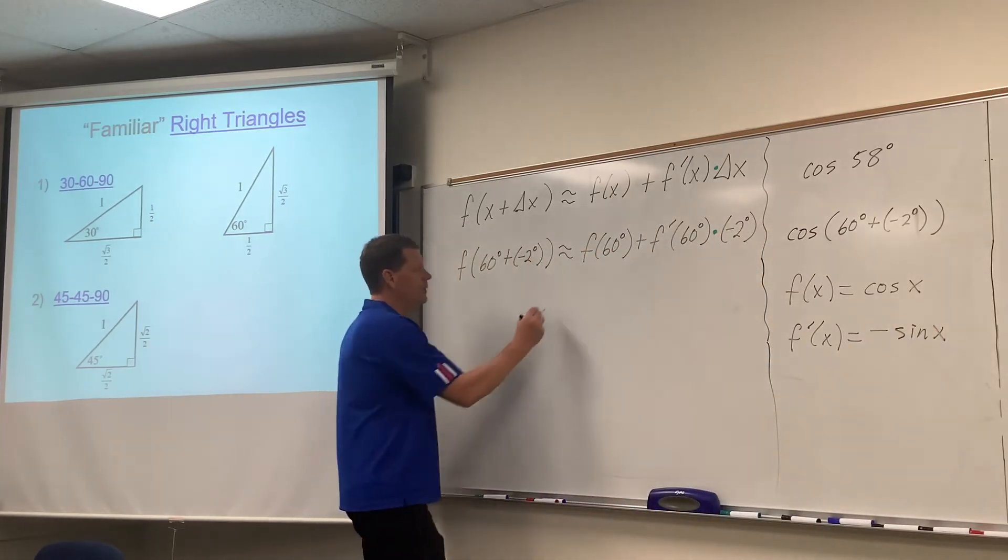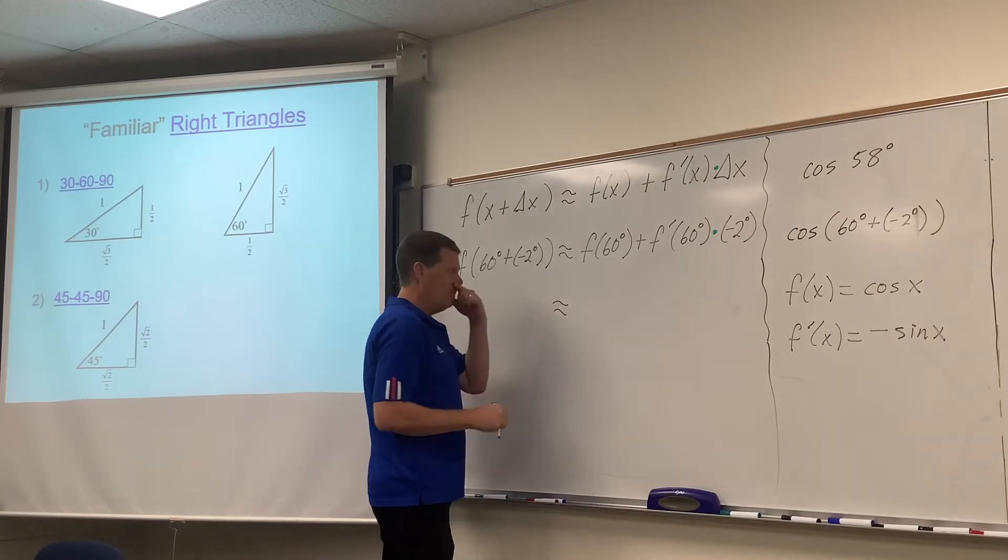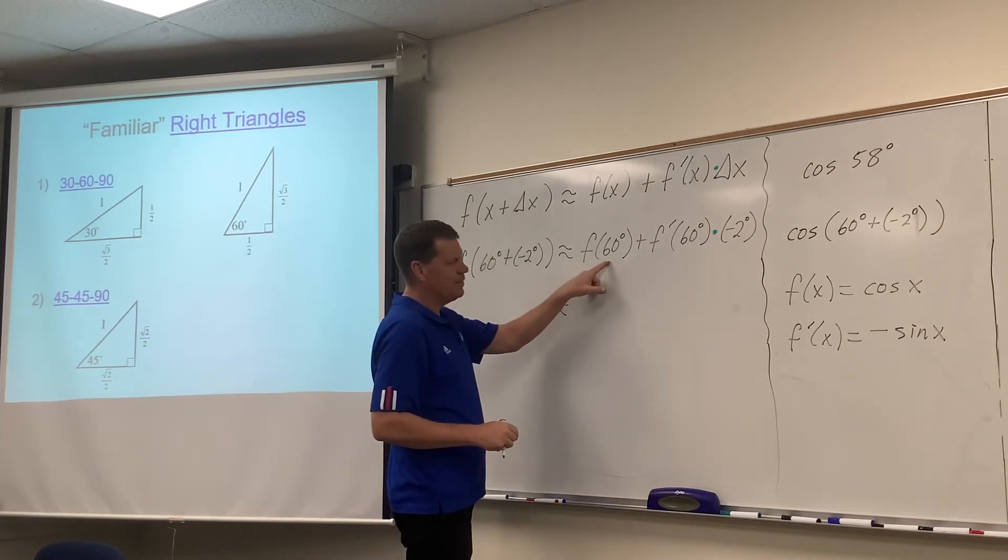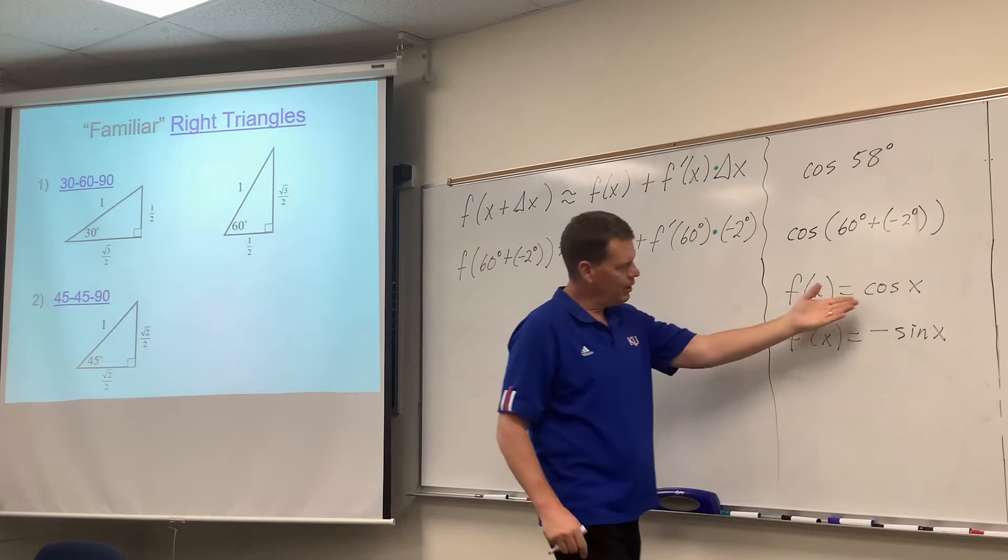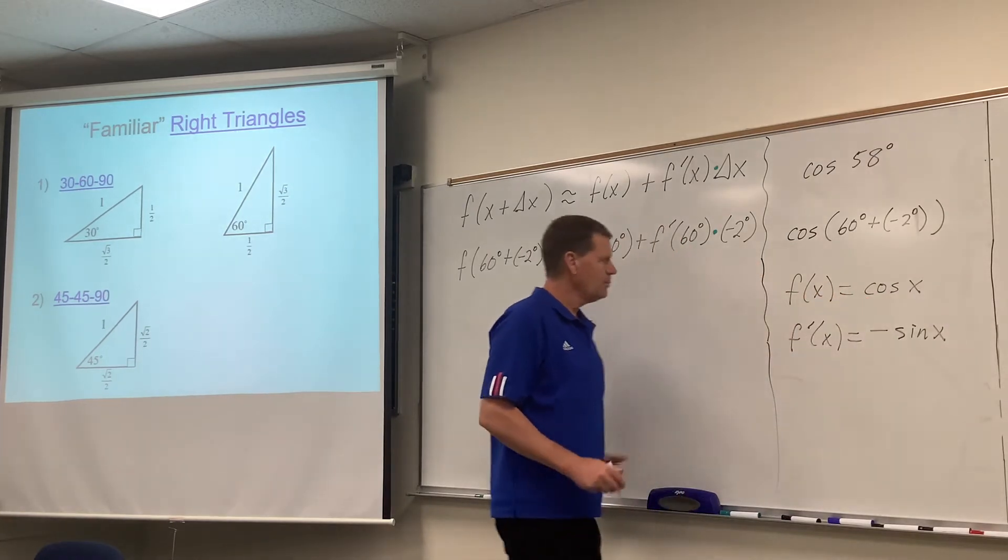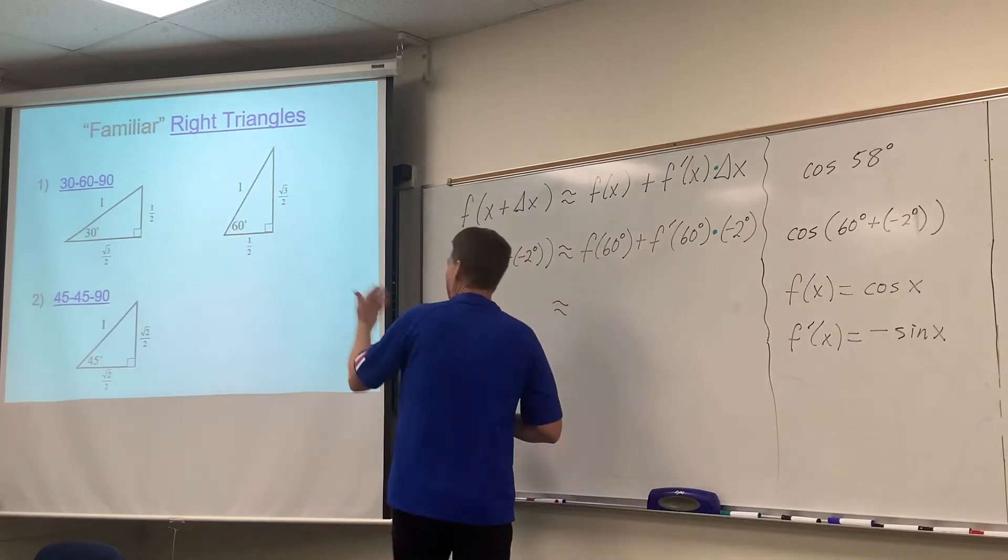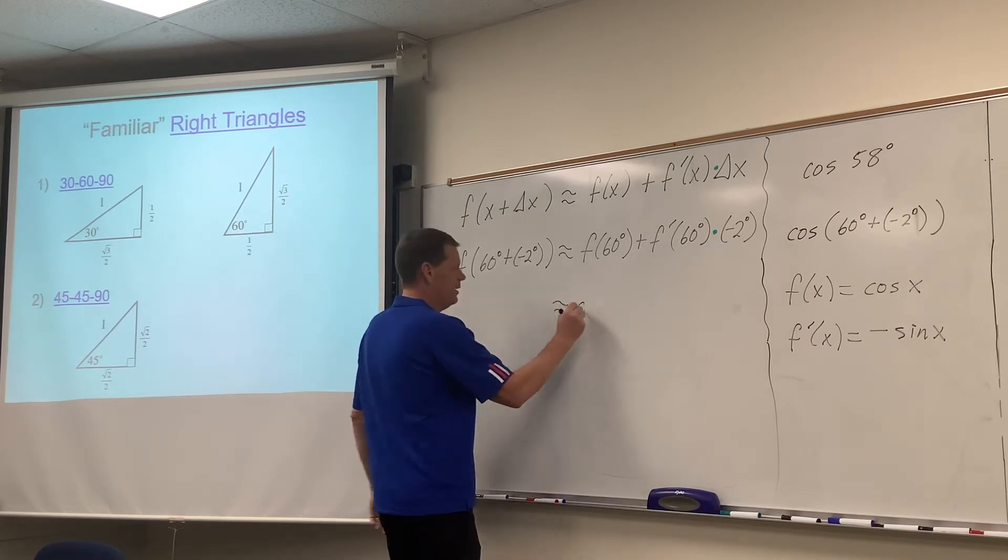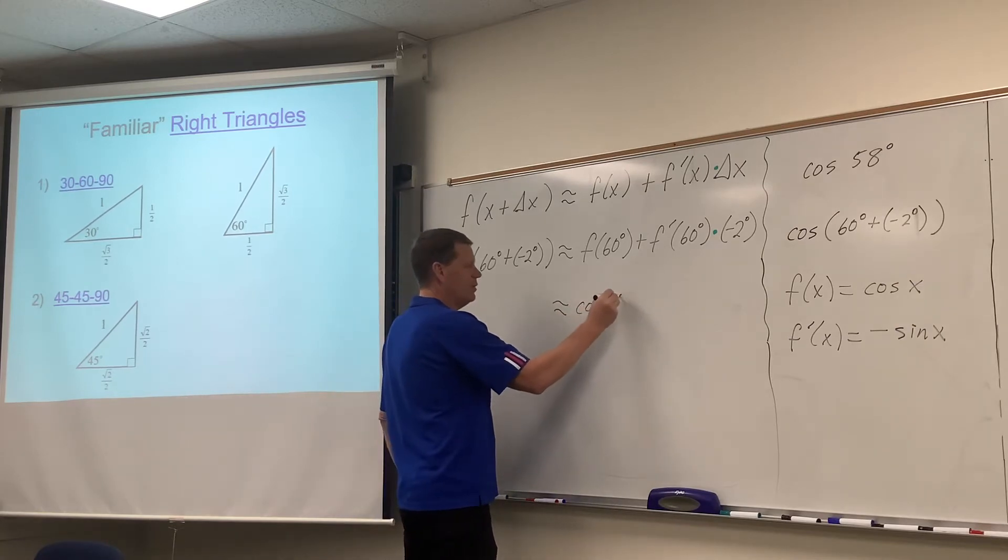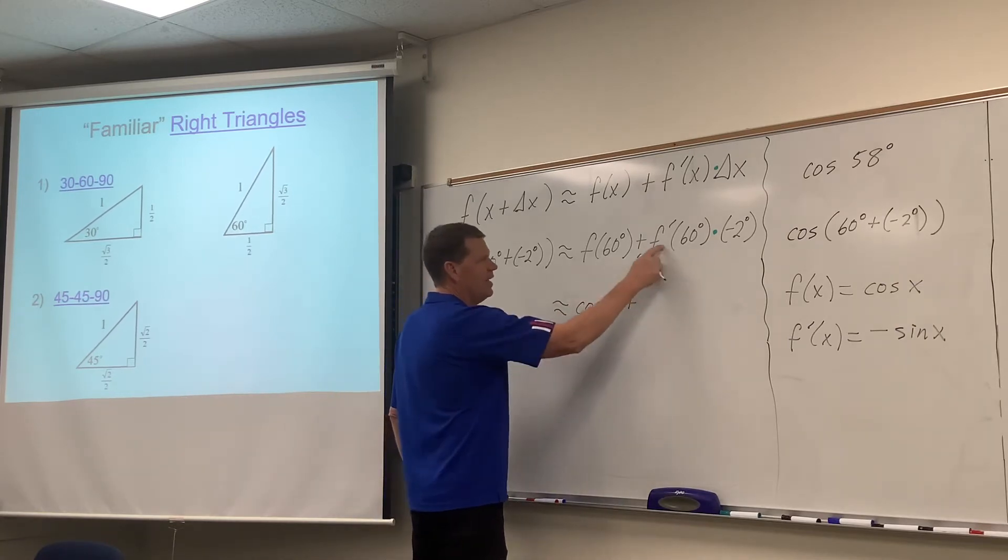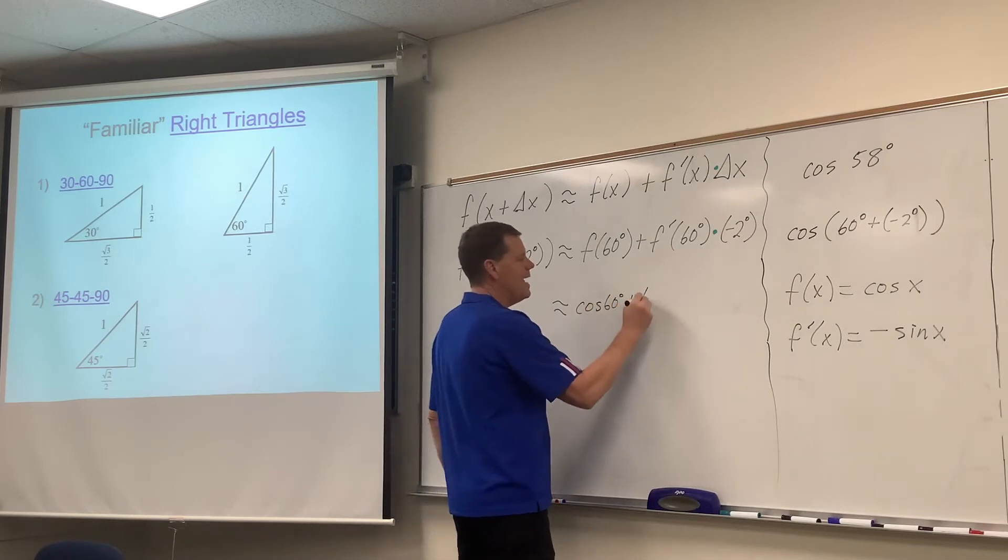Now f of 60 degrees would be the cosine of 60 degrees. I'm tempted to, well I'll write it here. So that'd be the cosine of 60 degrees plus f prime negative sine of 60 degrees.